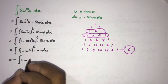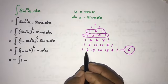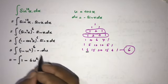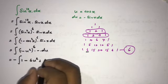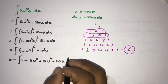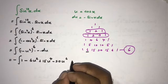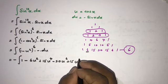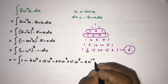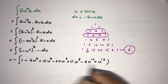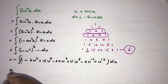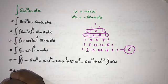Expanding (1 minus u squared) to the sixth power using those coefficients, we get: 1 minus 6u squared plus 15u to the fourth power minus 20u to the sixth power plus 15u to the eighth power minus 6u to the tenth power plus u to the twelfth power. So the integral becomes minus the integral of this polynomial du.